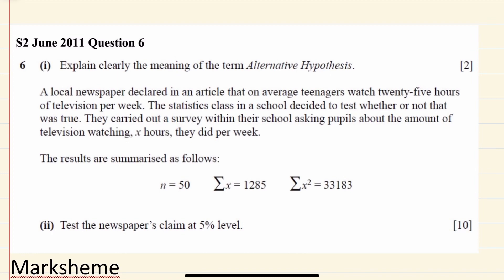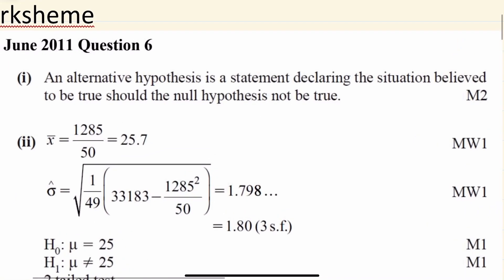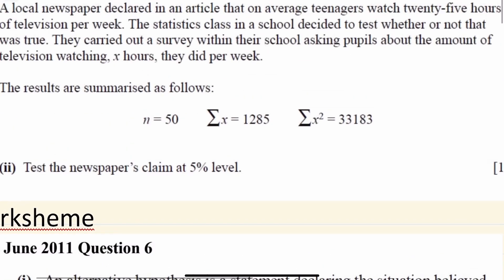The first part of the question asks to explain clearly the meaning of the term alternative hypothesis. The mark scheme says an alternative hypothesis is a statement declaring a situation believed to be true should the null hypothesis not be true. It's basically what you think is true, and the whole idea of this testing is that you're trying to test and prove that it is true.